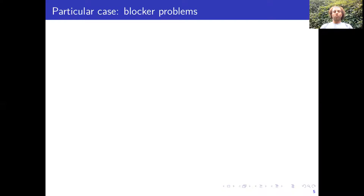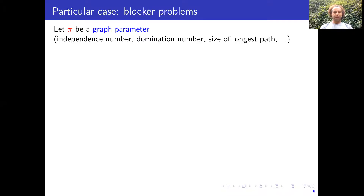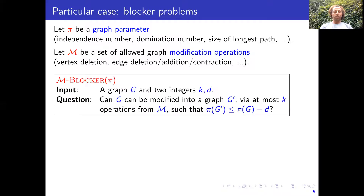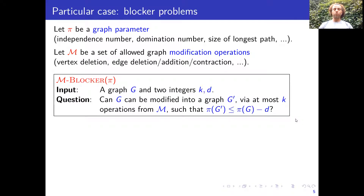We consider a particular case commonly known in the literature as blocker problems. Here, let pi be your favorite graph parameter — for instance, the domination number of a graph, or the size of a longest path. Let M be a set of allowed modification operations. We are given a graph G and two integers K and D, and we want to transform G to a graph G prime using at most K operations from M.